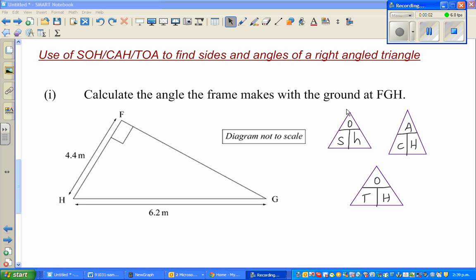The objective of this video is to find sides and angles using SOH-CAH-TOA. This is a well-known mnemonic. SO stands for sine—sine of an angle is opposite over hypotenuse. CAH stands for cosine of an angle, cosine of theta is adjacent over hypotenuse. And TOA stands for tan, or tangent of an angle is opposite over hypotenuse.